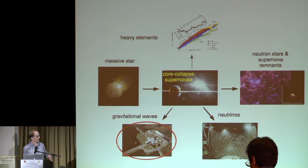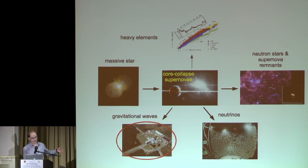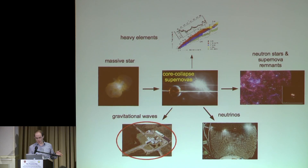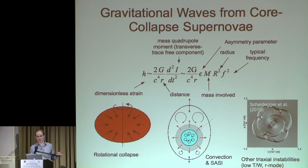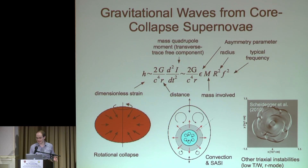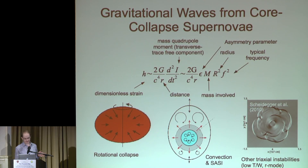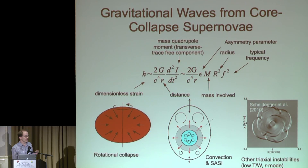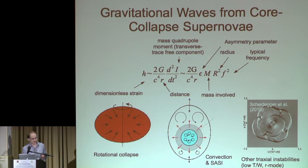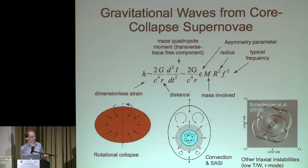Gravitational waves are the only signature among all these — direct observations, indirect constraints from nucleosynthesis, remnant properties, and the neutrino signal — that we haven't detected yet. So what's in store for us if we do, and why is the gravitational wave signal from core collapse supernovae much more difficult to detect than all other signatures, and much more difficult than binary merger events? To get an idea, look at the Einstein quadrupole formula, which tells you the gravitational wave strain is given by the second time derivative of the quadrupole moment of the system.